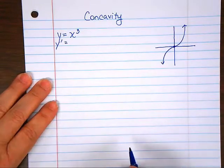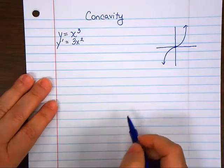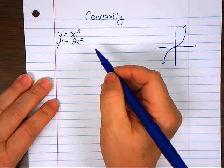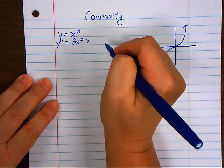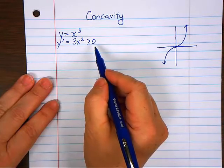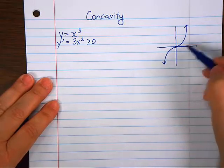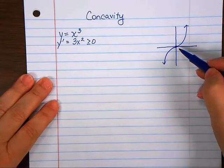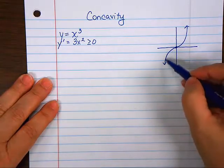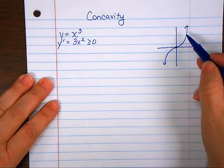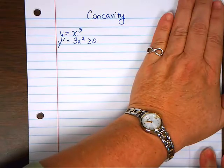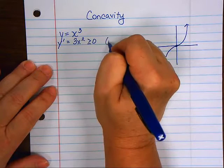What is the derivative of x to the third? 3x squared. No matter what I plug in for x, the sign of the first derivative will always be positive — or zero if I plug in zero. If the first derivative is positive, that means the function is increasing. This graph is increasing all the time, but the question is: how do you know it's not a straight line? How do you know it does this curvy wiggle thing?